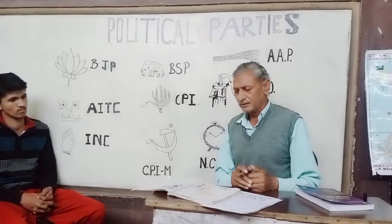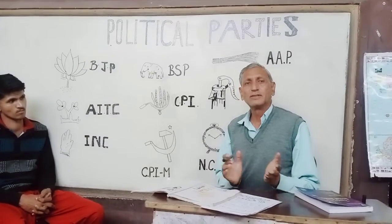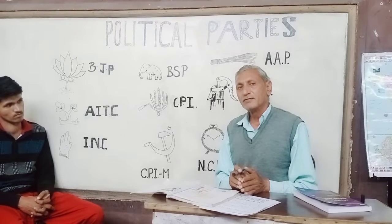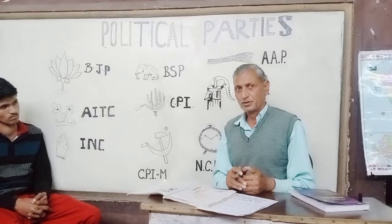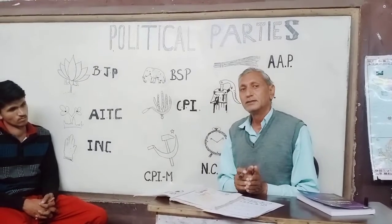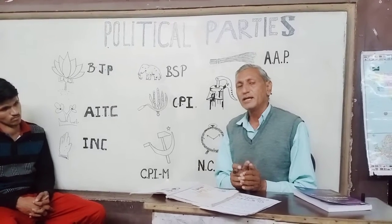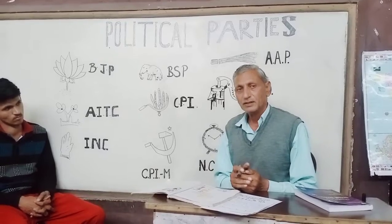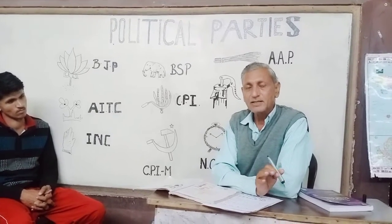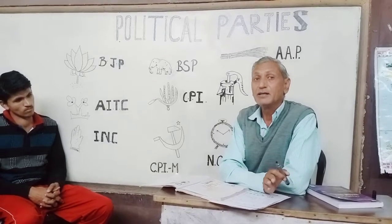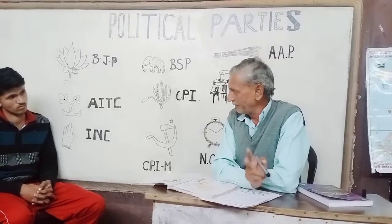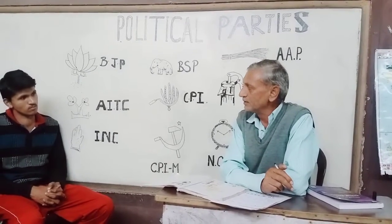Democracies that follow the federal system all over the world basically have two kinds of parties: the parties which have their presence in almost the complete federation or many units of the federation, and the parties which have their presence only in one of the units of the federation. In India also we have two kinds of parties. Parties with presence in many units are national parties and parties present only in one unit are state parties.